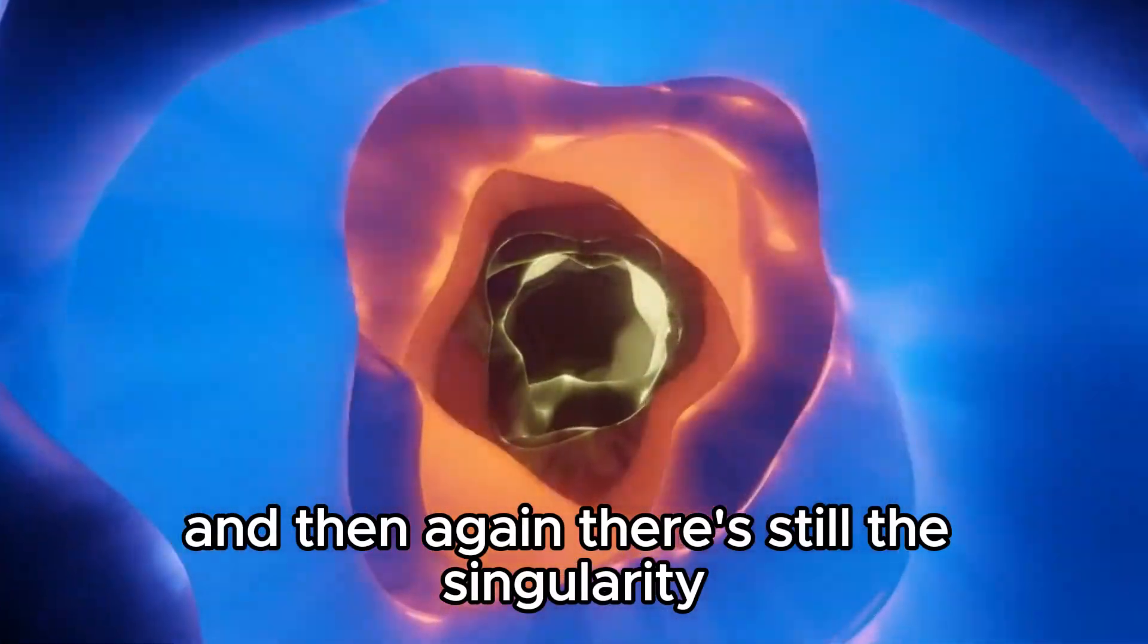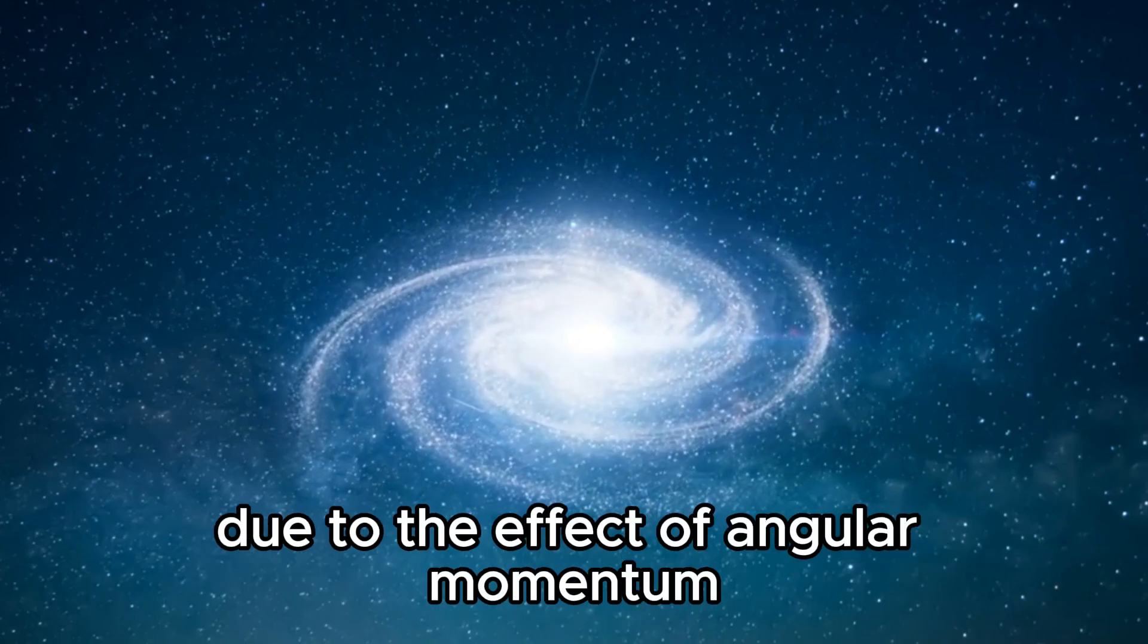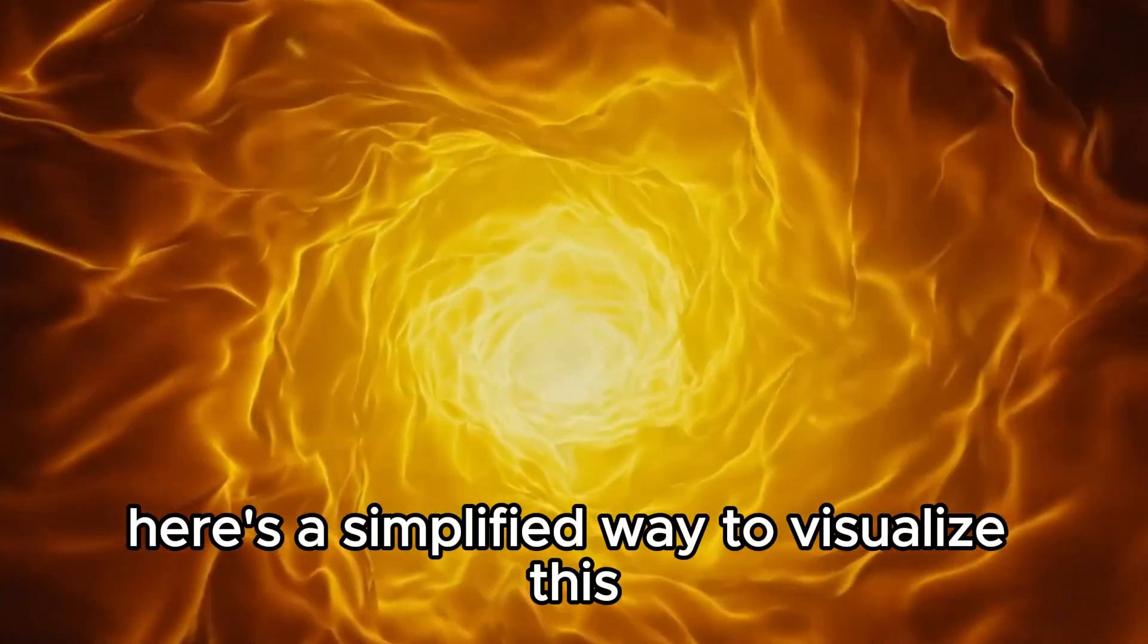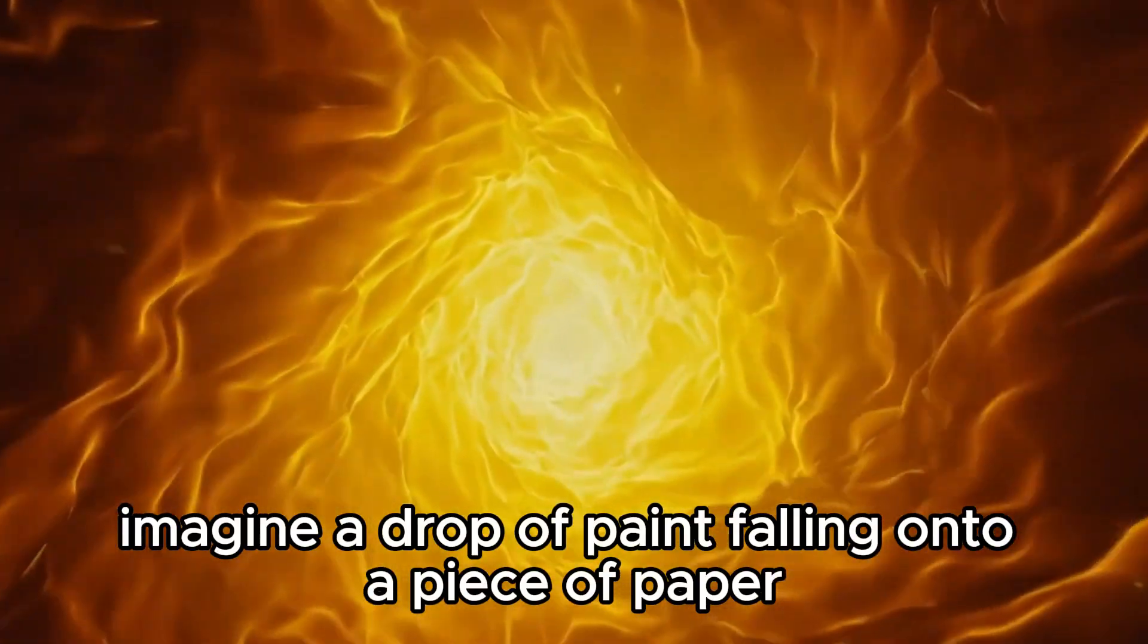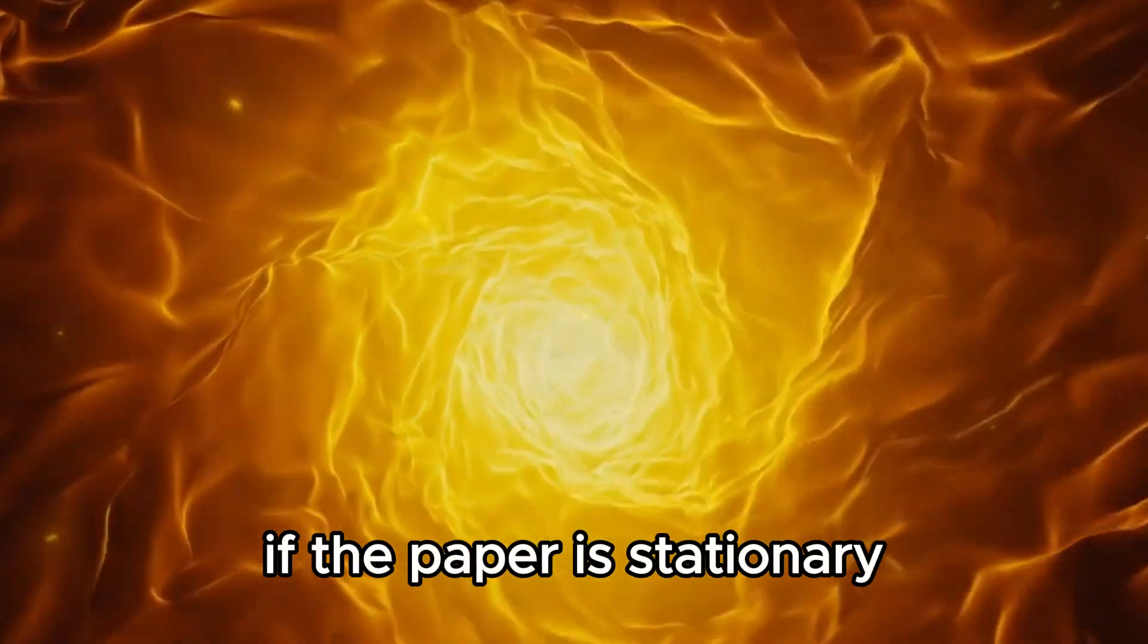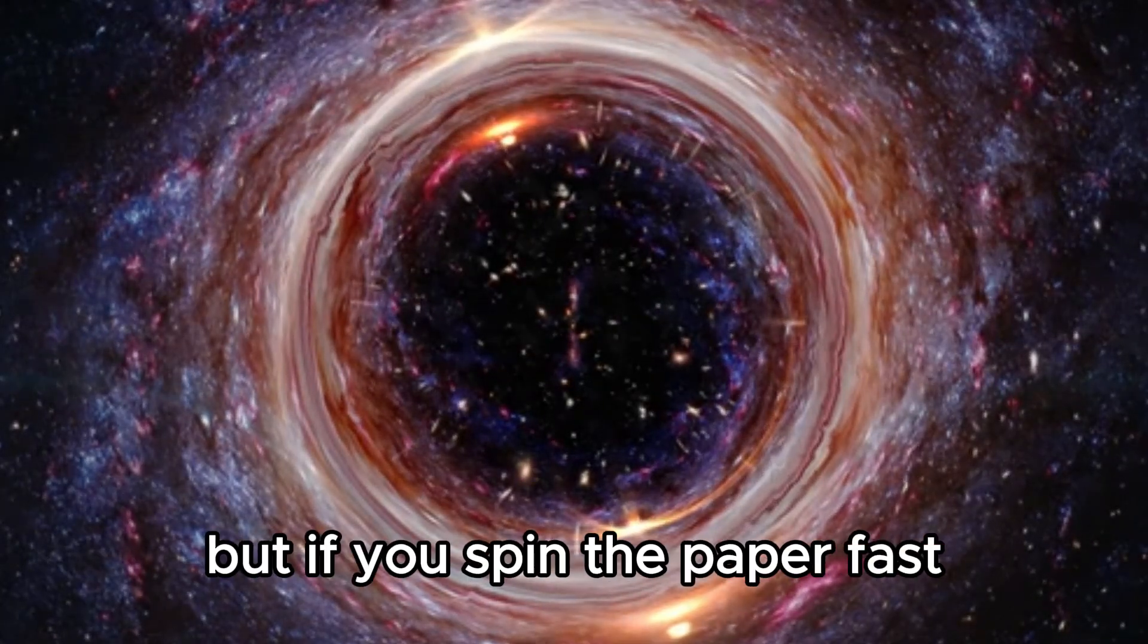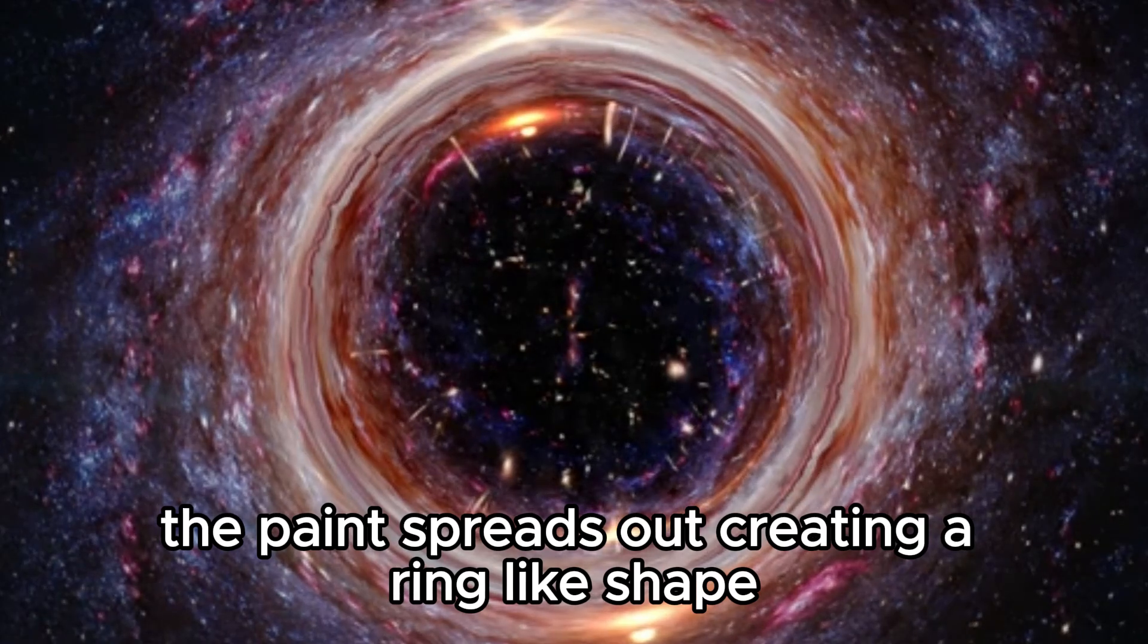And then again, there's still the singularity, although it doesn't have a point-like shape, but rather a ring-like structure due to the effect of angular momentum that smooths it out. Here's a simplified way to visualize this. Imagine a drop of paint falling onto a piece of paper. If the paper is stationary, the paint forms a single dot. But if you spin the paper fast as the drop falls, the paint spreads out, creating a ring-like shape.